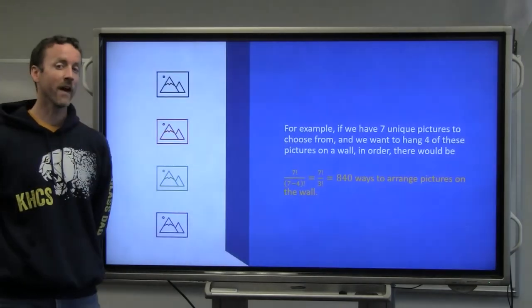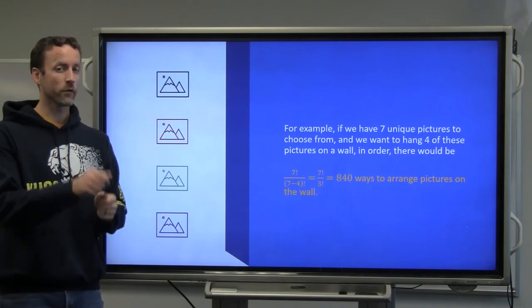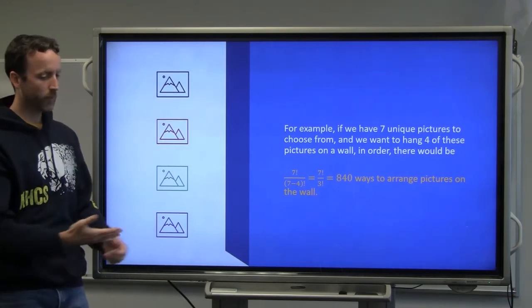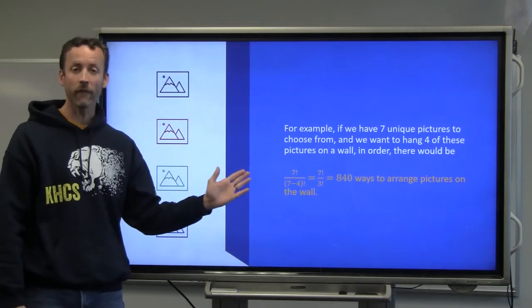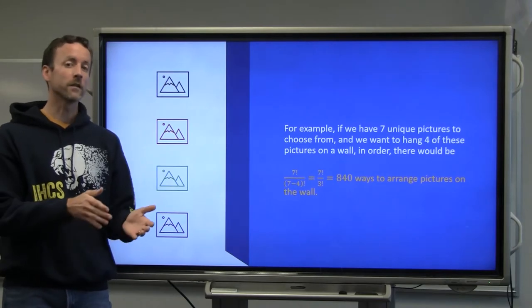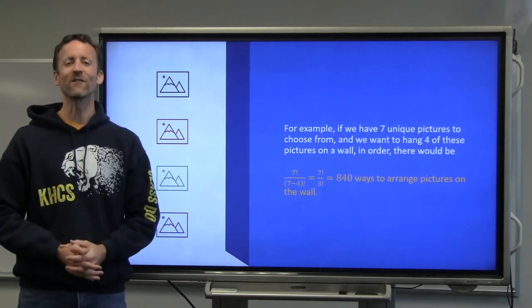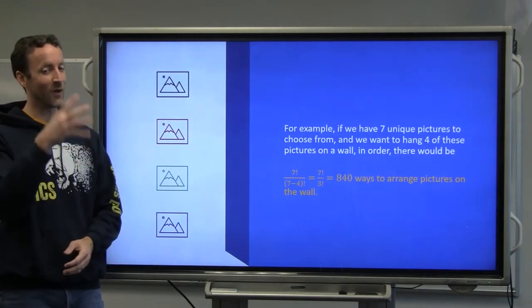For example, what if I have seven unique pictures, and I want to pick four of those pictures to put on the wall? There's an arrangement of four, but I have seven to pick from. Well, I would use this formula of seven factorial over seven minus four factorial, and I would get 840 ways to arrange four unique pictures on the wall.